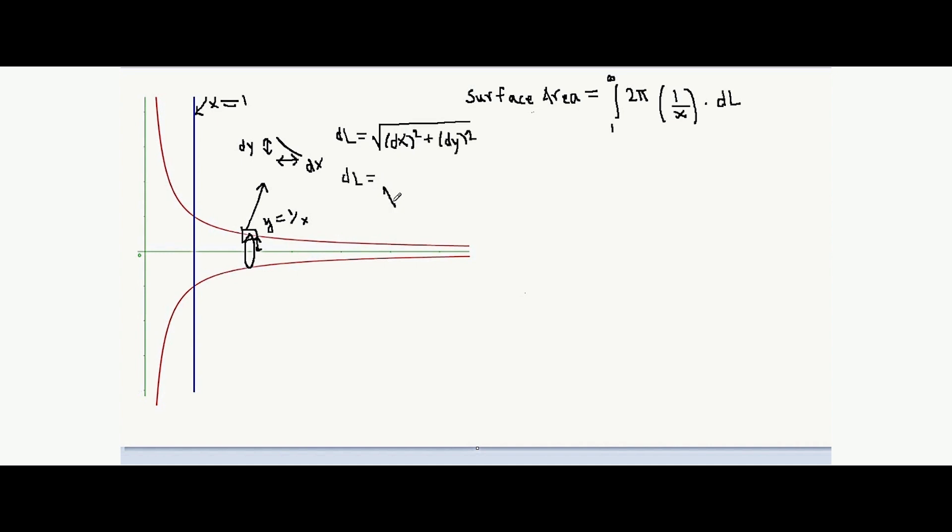we can write the value of dl as under root of dx square plus dy square. Now taking dx out from the square root term, we get dl equal to under root of 1 plus dy by dx the whole square into dx. So we could now substitute the value of dl in our surface area integral.